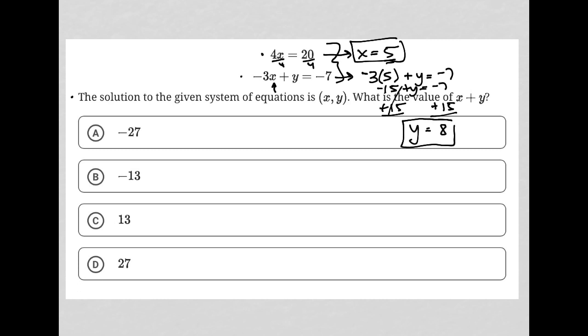Now that I know y is equal to 8 and x is equal to 5, the question is asking for the value of x plus y. 5 plus 8 is 13, and therefore the correct answer here is choice C.